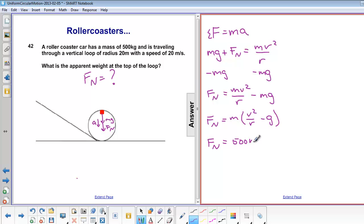Mass of the roller coaster is 500 kilograms, v is 20 meters per second, r is 20 meters, and g is 9.8 meters per second squared. So the normal force is 5,100 newtons.